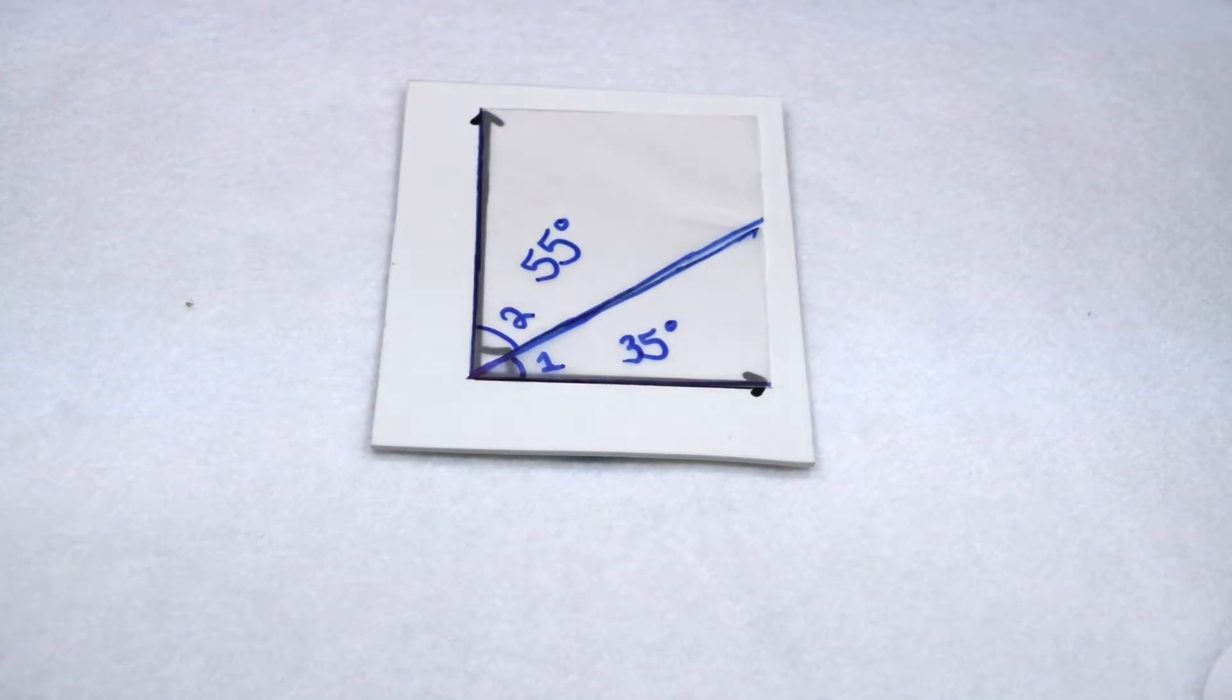In both the examples that we've done, the angles that we've used have been acute angles. Acute angles measure less than 90 degrees. Since we want the sum of our complementary angles to add up to 90, we couldn't use anything larger like obtuse angles.